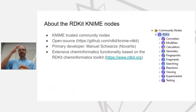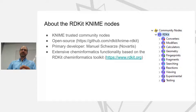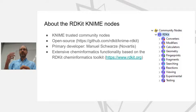The primary developer is Manuel Schwarzer at Novartis; I also do a bit of work on them. The nodes provide a fairly extensive set of cheminformatics functionality for KNIME based on the RDKit cheminformatics toolkit. As mentioned in the intro, KNIME is a general-purpose data analysis platform, so it doesn't have domain-specific things like chemistry built in — and that's what we set out to do with the RDKit nodes. We also provide access to the RDKit backend, which is used in some other KNIME extensions, as we'll hear from Steve later.